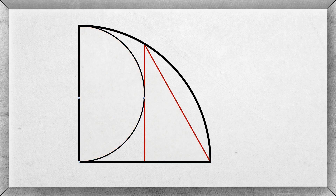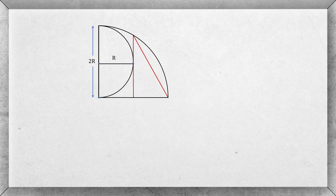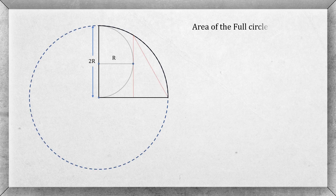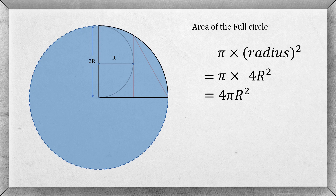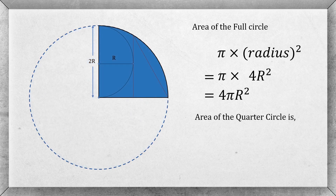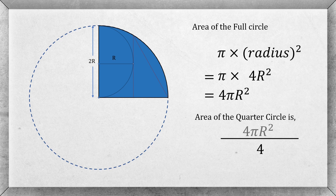First, find the area of the quarter circle. Let's say the radius of the semicircle is r, so the diameter of the semicircle is 2r, and therefore the radius of the quarter circle is 2r. Now complete the circle. The area of the full circle is π(2r)², which simplifies to 4πr². Since the area of the quarter circle is one-fourth of the full circle, the area of the quarter circle is πr².